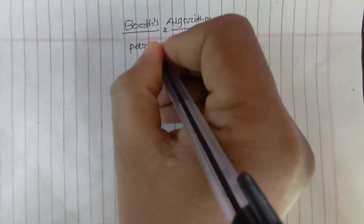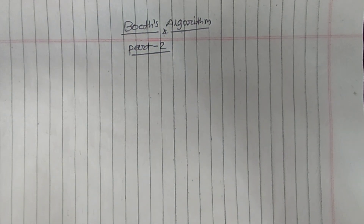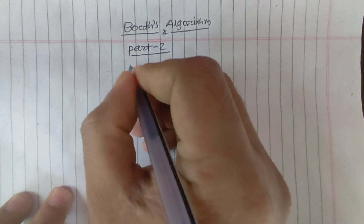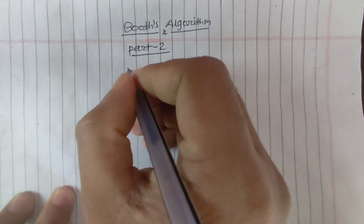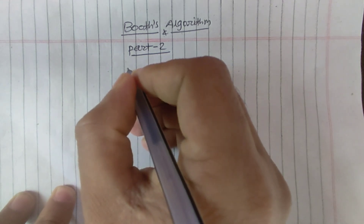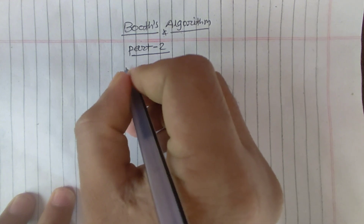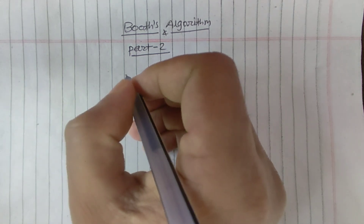Hello everyone, I am Sanjeev and I am with you with a new video on Booth's algorithm. This is the second part of Booth's algorithm. In this second part, we are going to multiply two numbers where one number is negative and another is positive. In the first part, we already multiplied numbers where both numbers were positive.